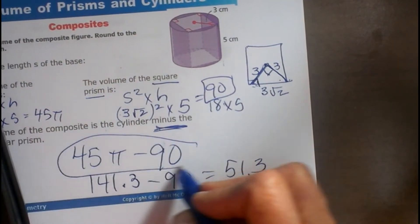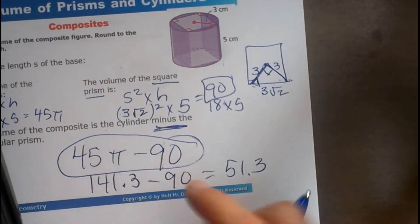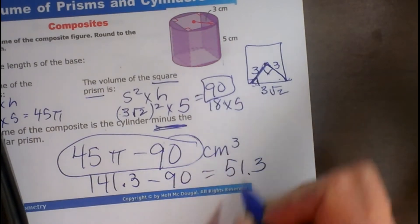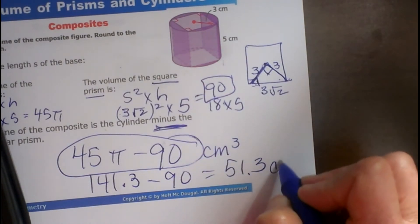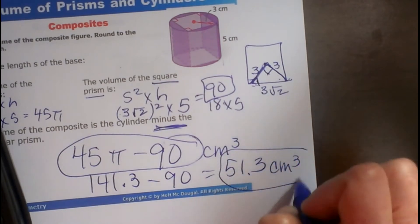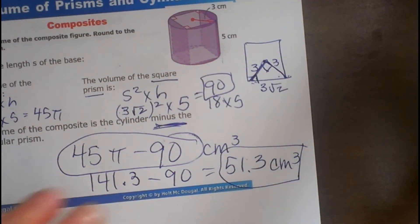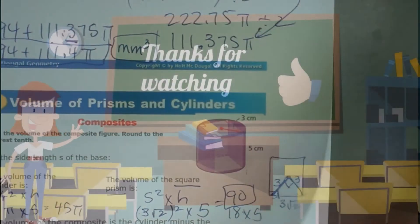If you are not asked, if you are asked for exact, you stop right here and just throw your units in there as centimeters cubed. If you are asked for an estimate or a decimal, you would round it off to this point. So, there you go, there is one of those where you are subtracting composites.